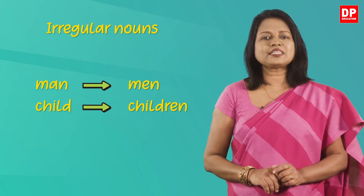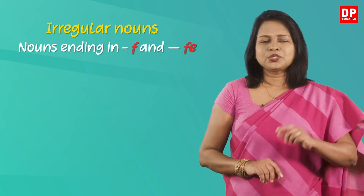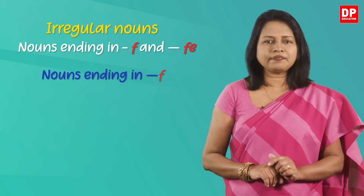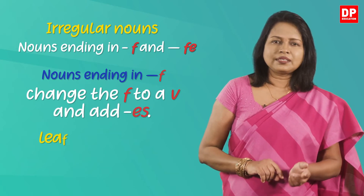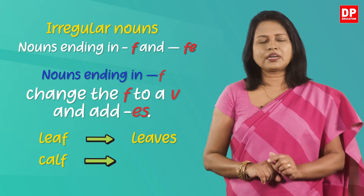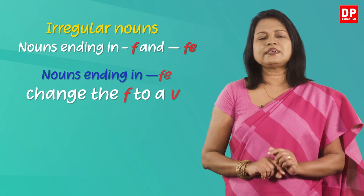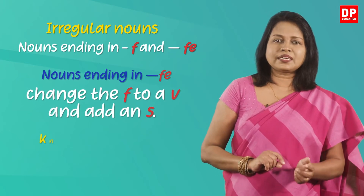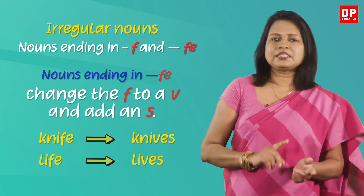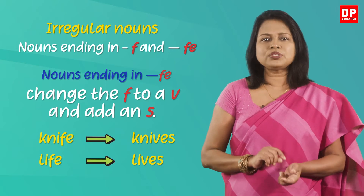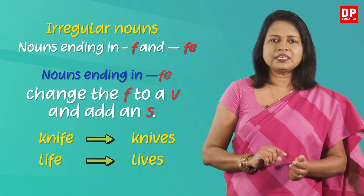First, let's discuss how to form the plurals of nouns ending in f and fe. To make a plural of a noun ending in f, change the f to v and add es. For example: leaf becomes leaves, calf becomes calves. Similarly, if a noun ends in fe, change the f into a v and add es. For example: knife becomes knives, life becomes lives. The result for both types — nouns ending in f or fe — is a plural that ends in v-e-s.